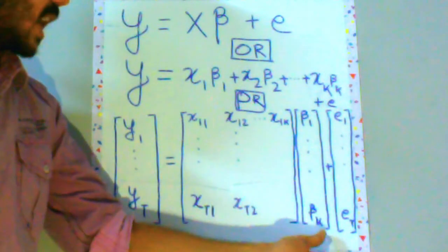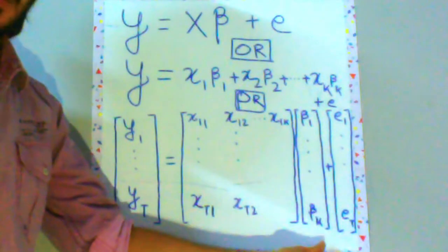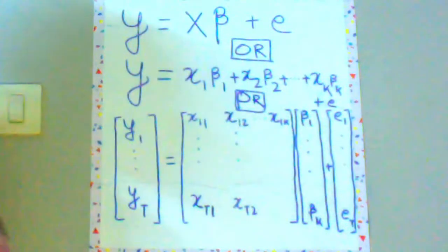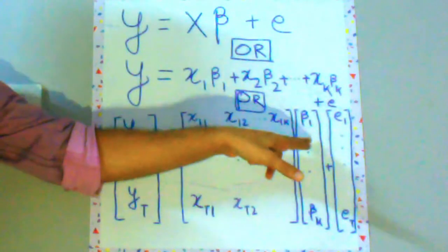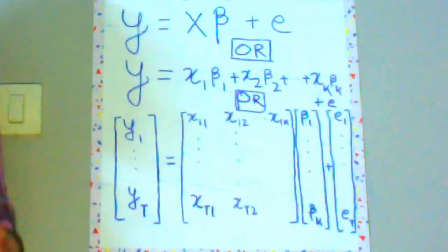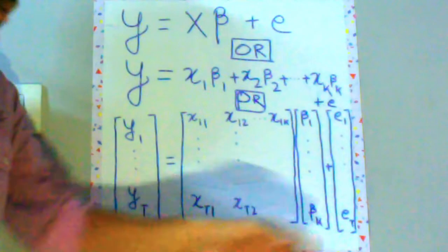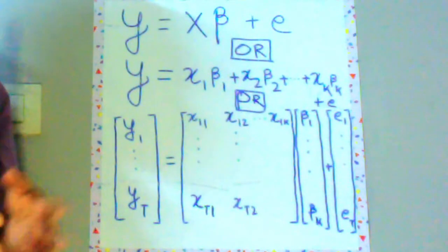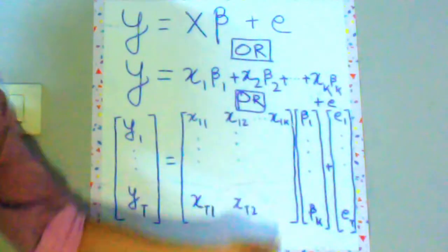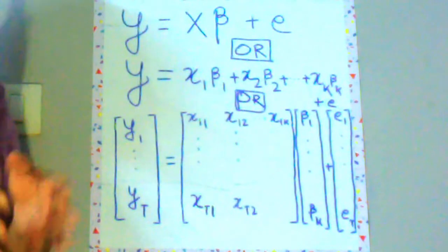Now beta is your vector as y was your vector having dimension t cross 1 or y vector. So this is beta vector having dimension k cross 1 and beta 1 is your intercept term, beta 2 will be the coefficient for first predictor and so on and beta k will be the coefficient for the k minus 1th predictor or xk.